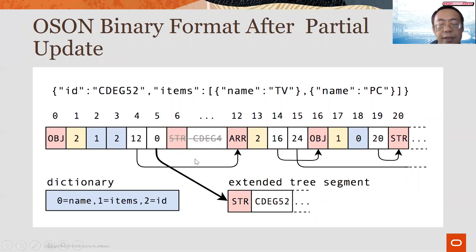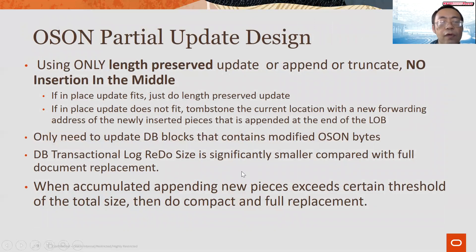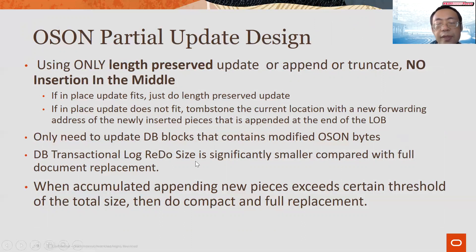Over time, when there are too many appends, we can do a full document replacement. The key takeaway of partial OSON update is that it supports length-preserving updates and in-place truncation, but never does any insertion in the middle. This allows us to update only the DB blocks containing modified OSON bytes. The database transaction log redo size will be significantly smaller compared with full document replacement. When cumulative pieces exceed a certain threshold, we do the full document replacement.